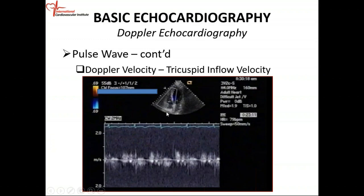Tricuspid inflow: apical four-chamber view with the cursor across the tricuspid valve, sample volume right there. This is your probe or transducer. Blood flows from the right atrium across the tricuspid valve into the right ventricle — that's a normal flow occurring in diastole. In diastole you have two envelopes: your E-velocity and your A-velocity, and they are above the baseline because the flow is moving towards the transducer — right atrium, tricuspid valve, right ventricle.